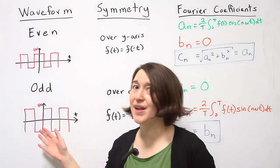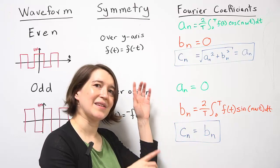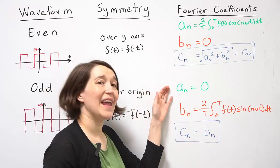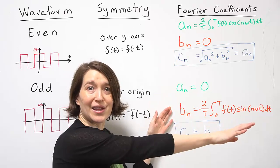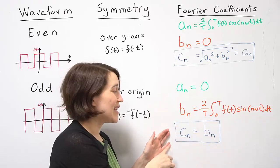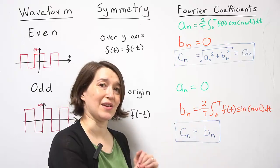For odd waveforms, we have essentially the opposite. An is always equal to 0, while Bn has to be calculated. And then again, Cn is directly equal to Bn.